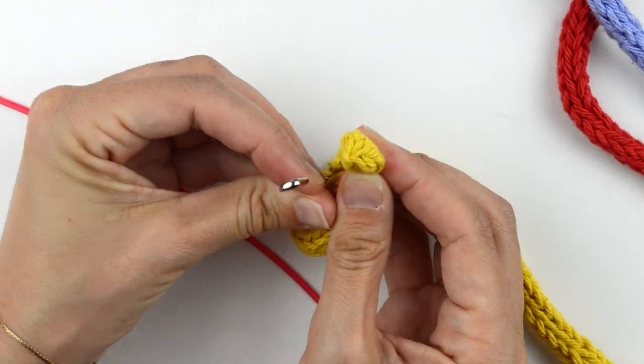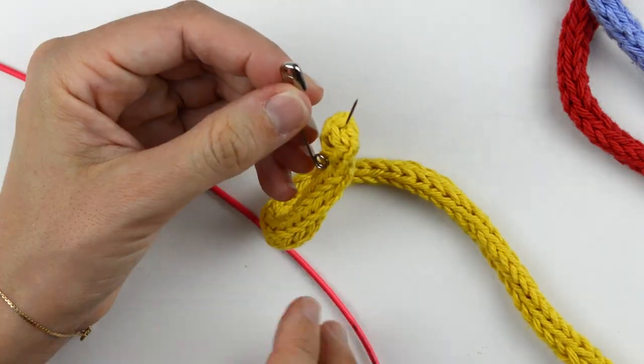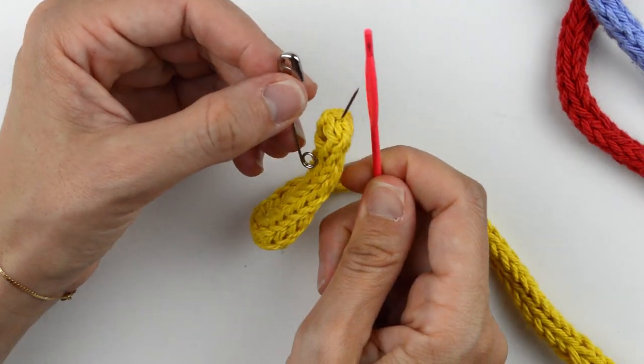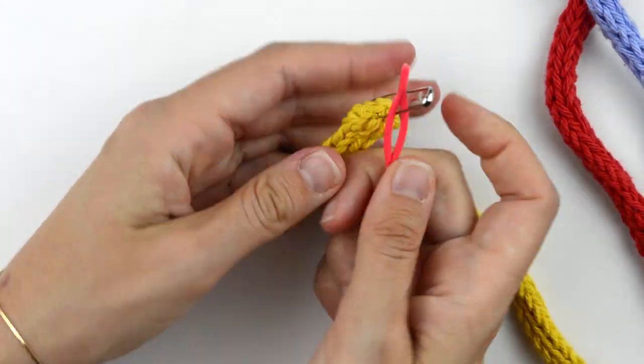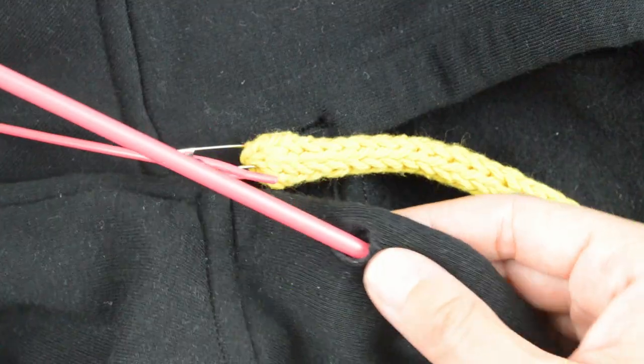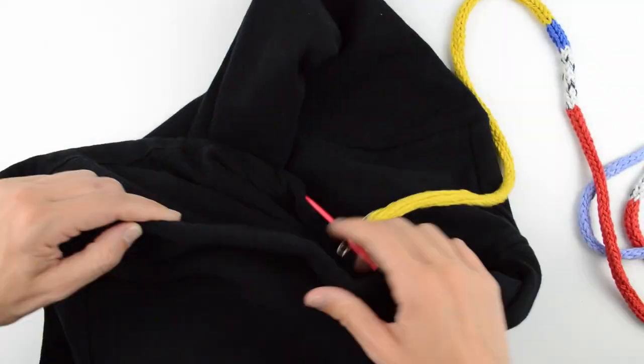And then if you have a drawstring threader, you can just run it through. My cord is too big for the eye of the threader, so I used a safety pin to join them. If you don't have a threader, you can just put a safety pin on the end and use it to slowly inch your way through the drawstring channel.